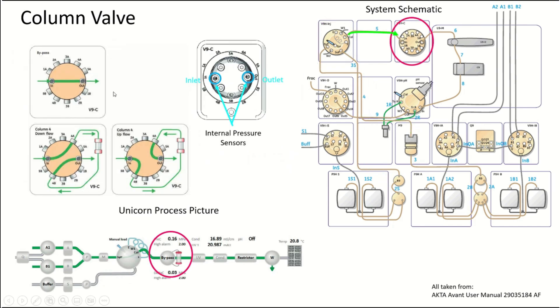Alright, so the column valve has an internal pressure sensor on the inlet and outlet side. This is what gives you your delta column pressure.